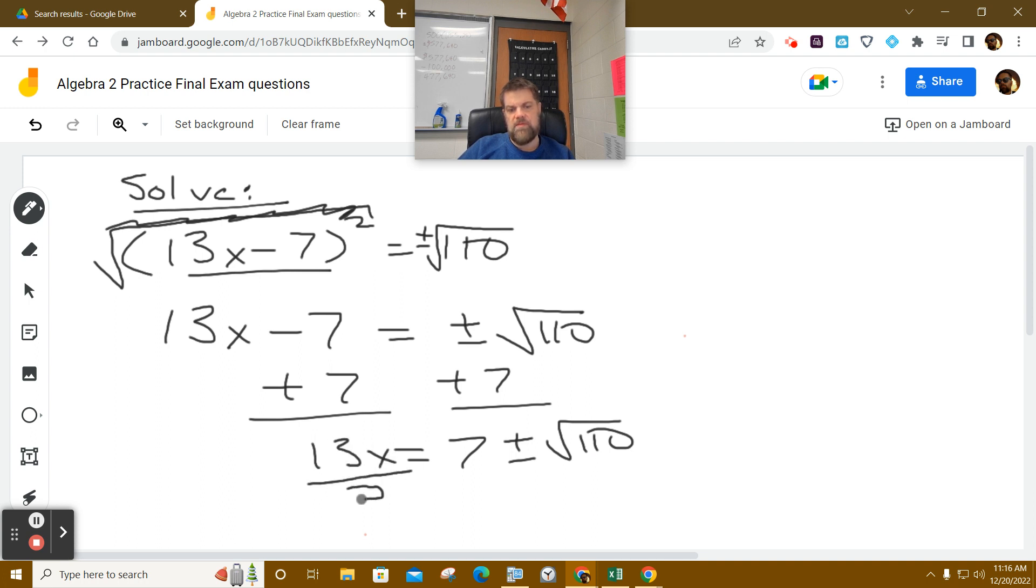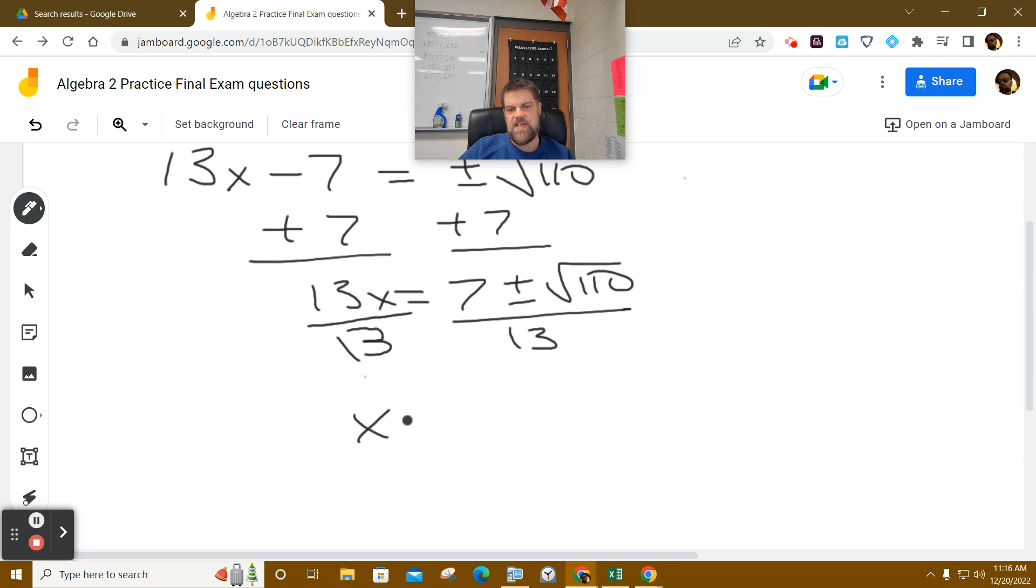Over here, we're going to divide by 13 and do the same thing all the way over here. And so, you get the solution is x equals 7 plus or minus the square root of 110 all over 13.